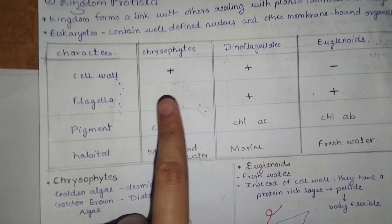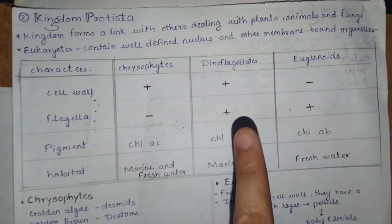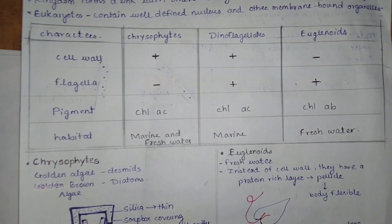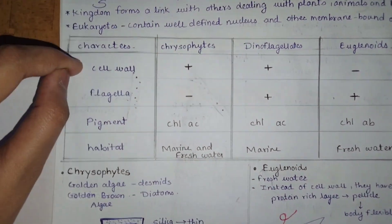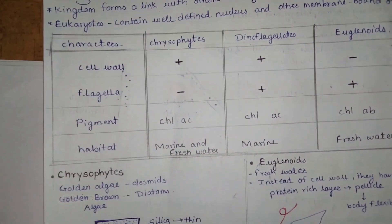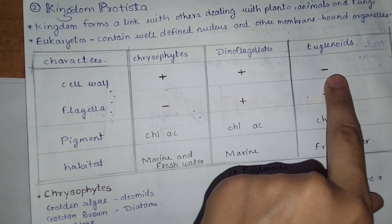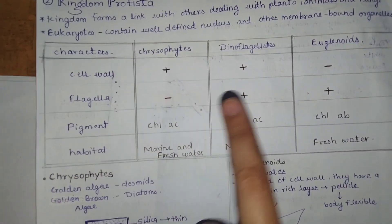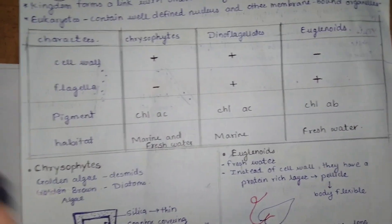In flagella: Chrysophytes have no flagella, but Dinoflagellates have flagella present, and Euglenoids also have flagella. Notice the pattern is opposite to cell wall — the flagella pattern is minus, plus, plus, which is the reverse of the cell wall pattern of plus, plus, minus.